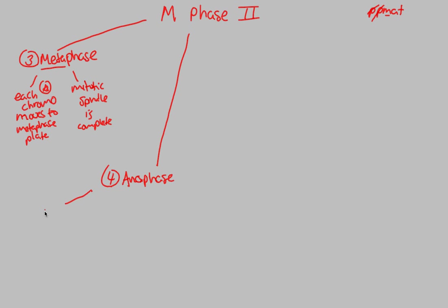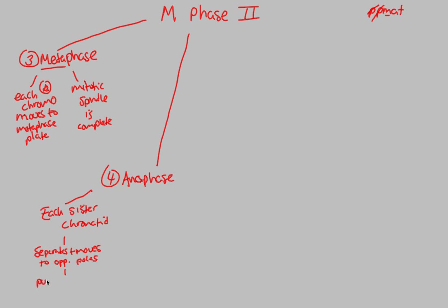In Anaphase, we focus on each sister chromatid. Each sister chromatid is now actually going to be separating and moving to opposite poles — one on one side of the cell and the other on the opposite side. This is all happening via the kinetochore microtubule.